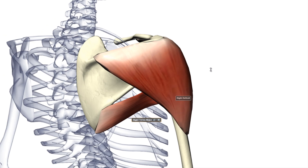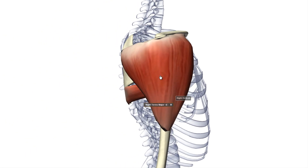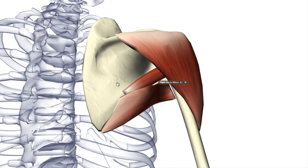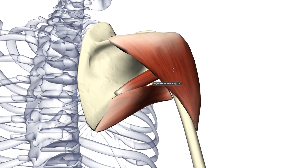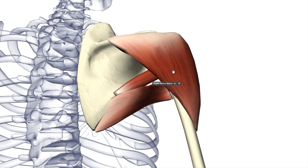Now I will talk about the muscles of the shoulder that create the rotator cuff. First I will mention the teres minor because I already mentioned the teres major. Here is the teres minor muscle. The function of the teres minor muscle is to laterally rotate and adduct the arm.